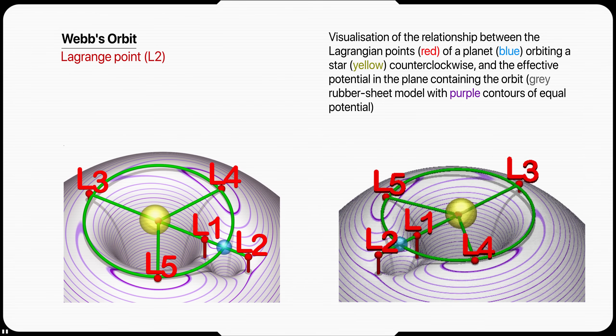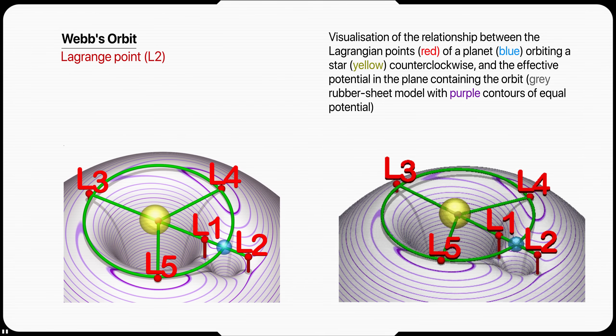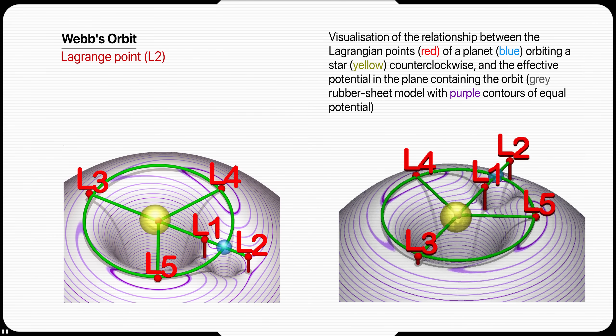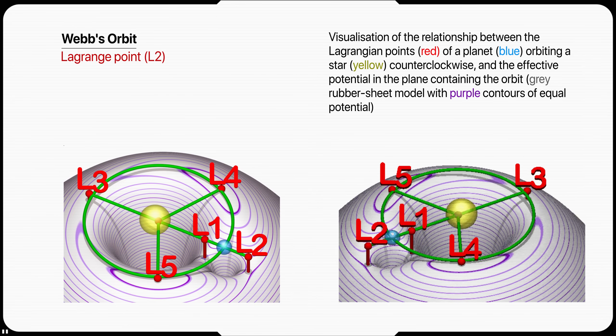At Lagrange points, the gravitational pull of the two large masses precisely equals the centripetal force required for a small object to move with them.